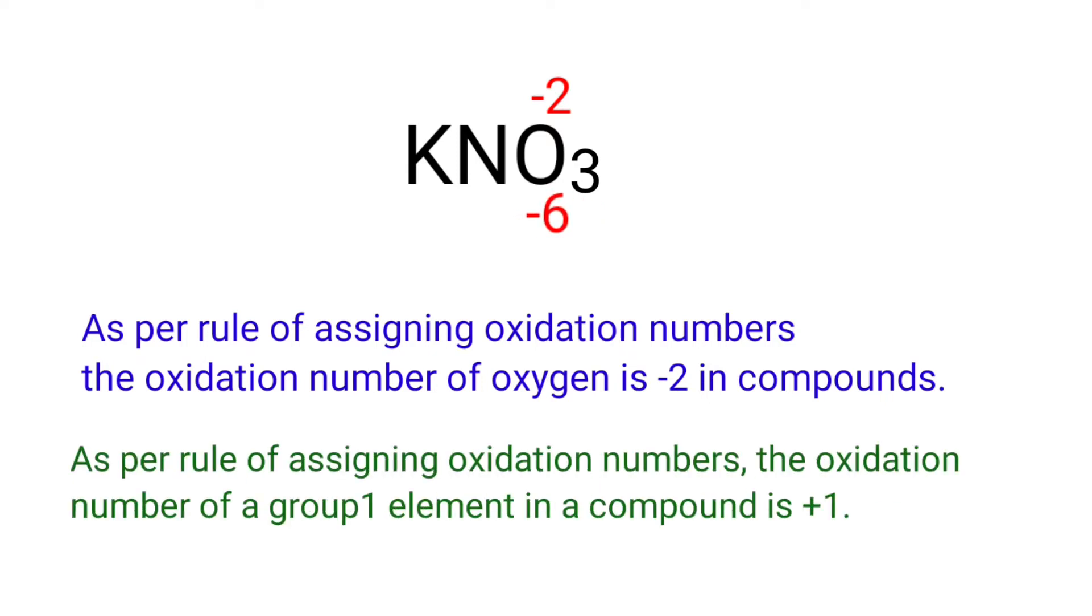As per rule of assigning oxidation numbers, the oxidation number of a group one element in a compound is plus one. Potassium is a group one element, so we can write the oxidation number of potassium is plus one.